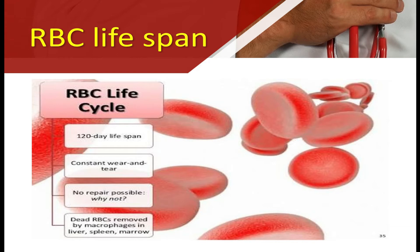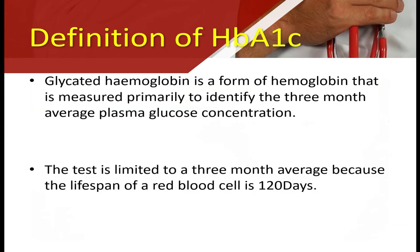To understand this, we will first look at the life cycle of RBC. Whenever an RBC is produced from the bone marrow, it is circulated through the blood vessels. After its period, it is destroyed by the spleen. During that entire duration, the glucose moiety is attached to the hemoglobin. The test is limited to a 3-month average because the lifespan of red blood cells is 120 days.